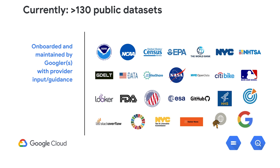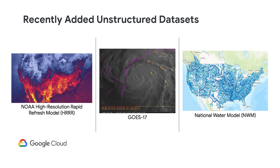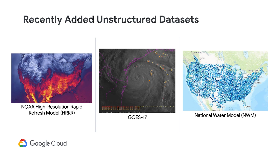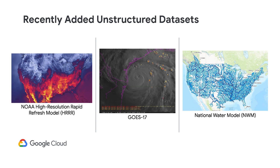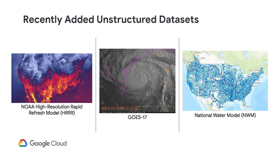You can see here a sample of our data providers, including NOAA, the U.S. Census Bureau, the United Nations Statistics Division, the Federal Elections Commission, and others. We're constantly adding new datasets. Here are just three examples of recently added unstructured datasets, all coming from NOAA, the National Oceanic and Atmospheric Administration. They include a high-resolution rapid refresh weather model, the new GOES-16 satellite imagery, and NOAA's national water model that provides streamflow information across the continental United States.